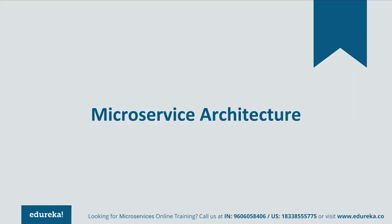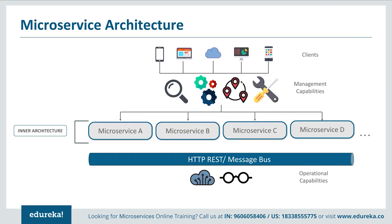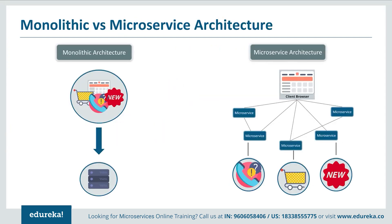Let's look at the different components of the microservices architecture. The architecture starts with different clients from different devices trying to perform different management capabilities such as build, search, and notification. Each functionality is segregated into separate microservices handling their own data — for example, microservice A handles search, microservice B handles build, microservice C handles notifications. All these individual microservices had their own load balancing and execution environments. They communicated within themselves through REST or message bus to perform operational capabilities such as automation and monitoring. Client requests were passed to the internal architecture through an API gateway.